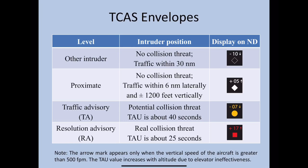A Traffic Advisory (TA) is a potential collision threat where tau is just 40 seconds — meaning if you continue the trajectory you will collide in 40 seconds. It is indicated by a solid amber circle. A Resolution Advisory (RA) is a real collision threat; tau is very short at 25 seconds to impact, and it is indicated by a solid red square.